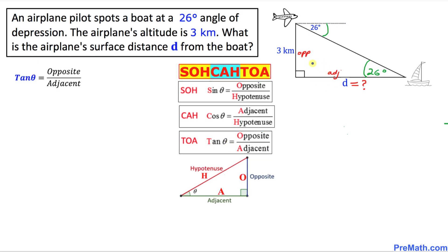In our given right triangle our angle is 26 degrees. So I can write tangent of 26 degrees equal to opposite — in our case 3 kilometers — on the top, divided by our adjacent which is simply d.